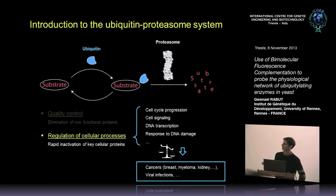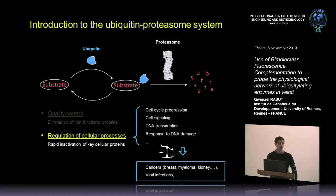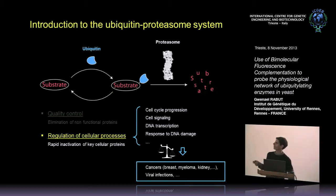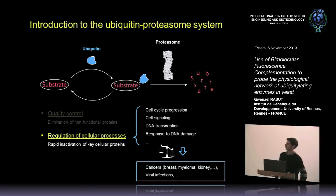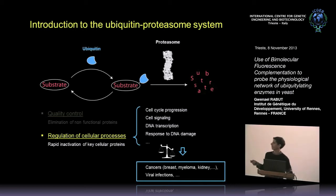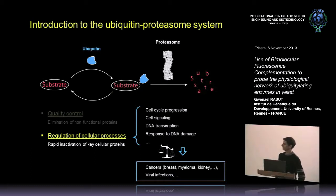Regulation of cellular processes accounts for fewer ubiquitination events, but it is not less important. In fact, most — if not all — cellular processes are regulated through ubiquitination and proteasome-dependent degradation. Key examples include cell cycle progression, many signaling events, DNA transcription, and the response to DNA damage. Any imbalance in those processes can lead to diseases, and cancer is probably the most prominent disease linked to imbalances in protein ubiquitination.